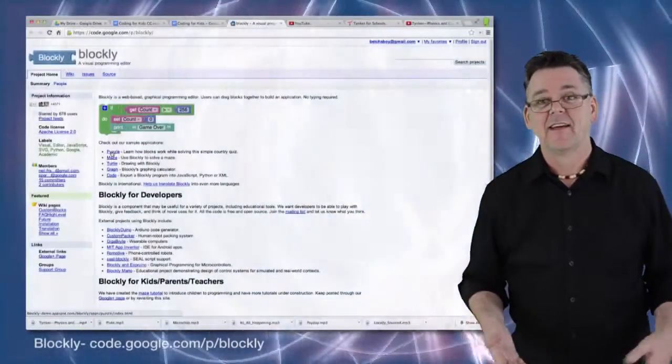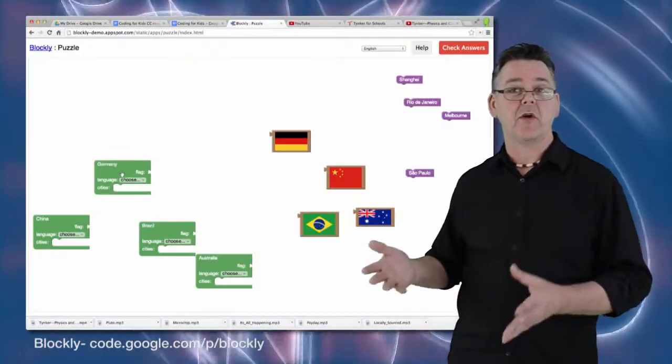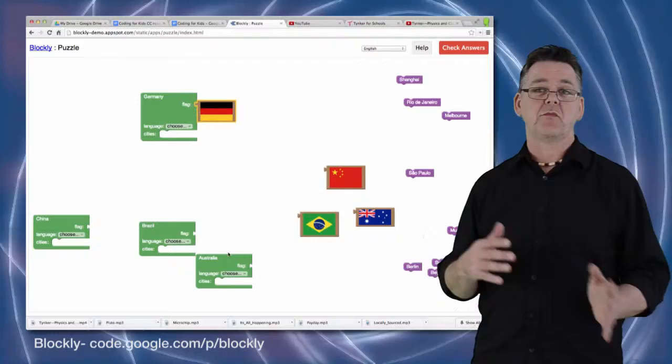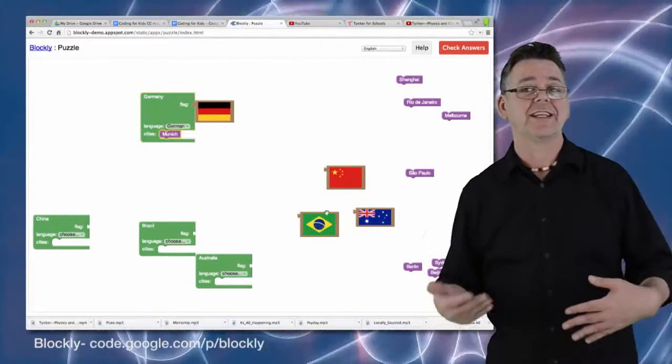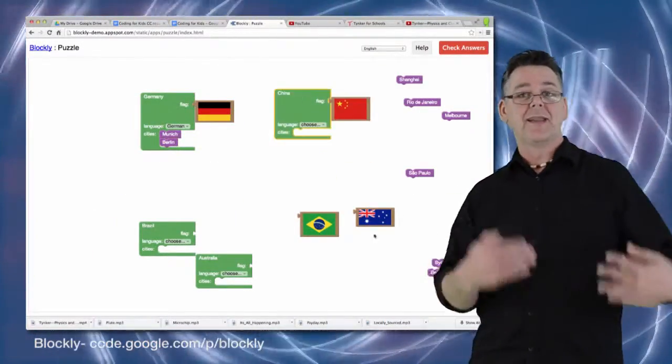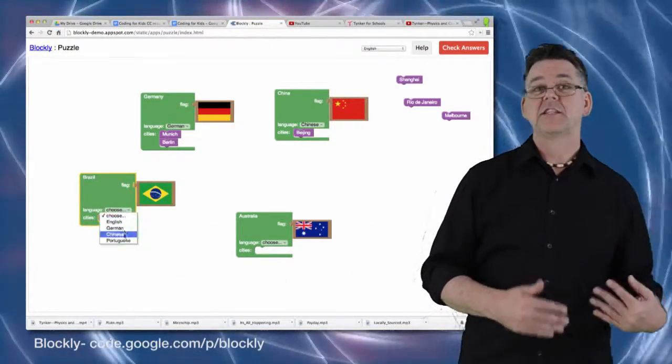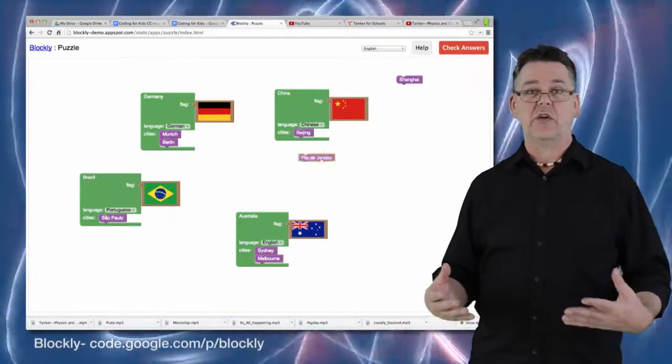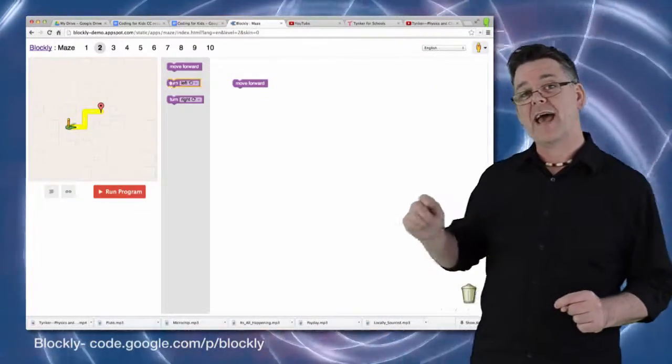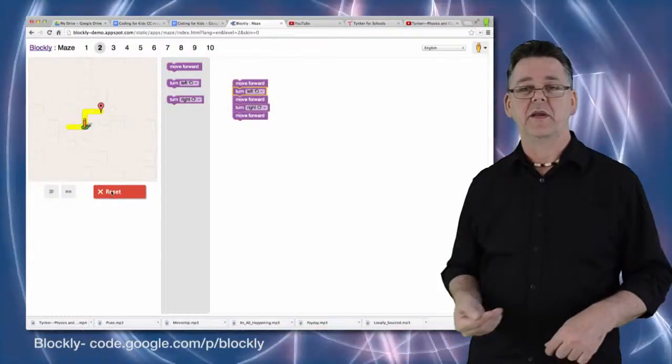And then there's Blockly. Now Blockly is a Google code project and it uses similar visual blocks of code that snap together to solve a number of coding challenges. And you can load, play and even hack a number of pre-made projects in Blockly. So it's great for deconstructing code. And Blockly actually forms the basis of Android App Inventor, which we'll talk about a little bit later.